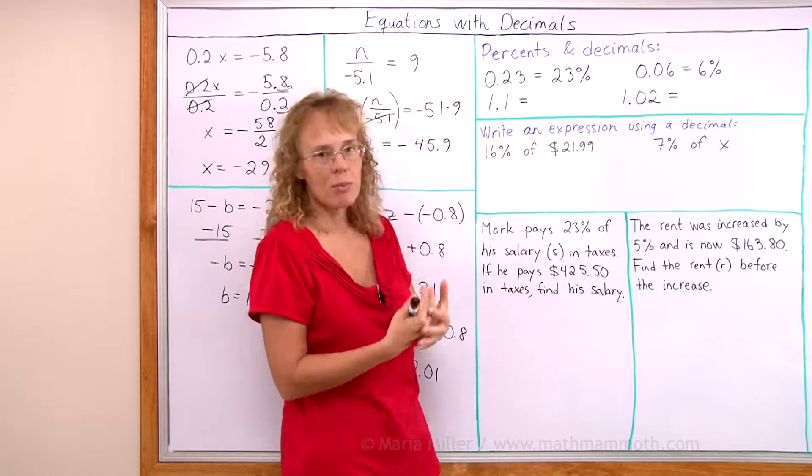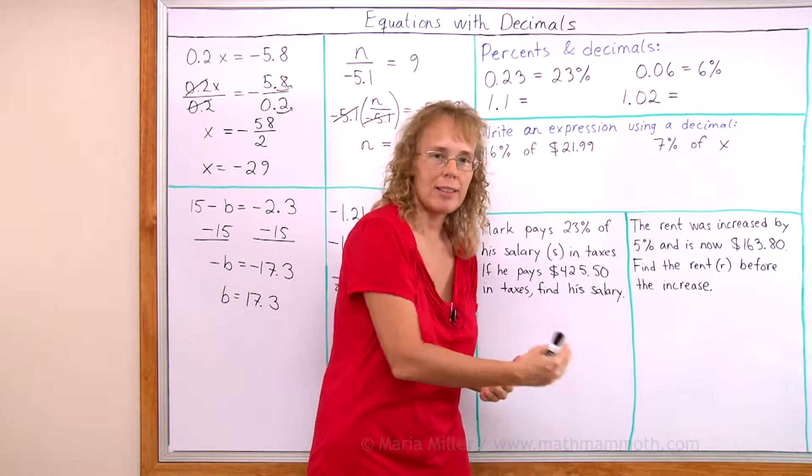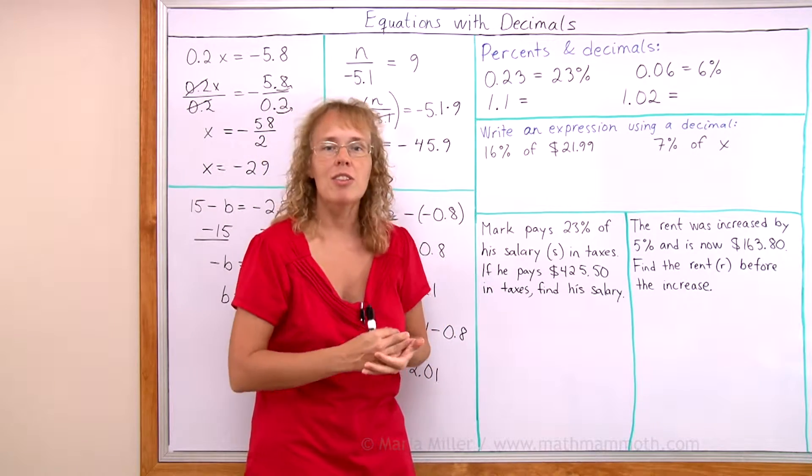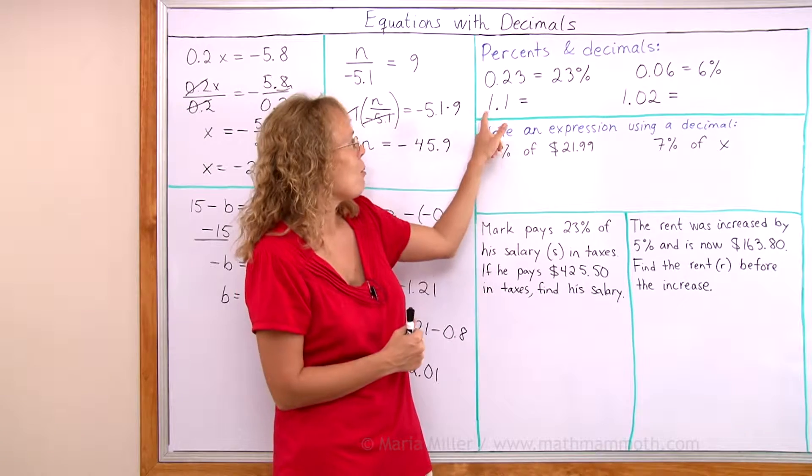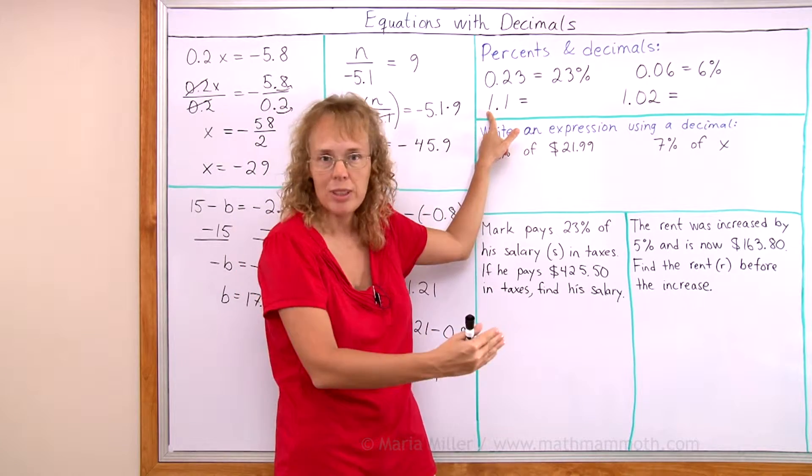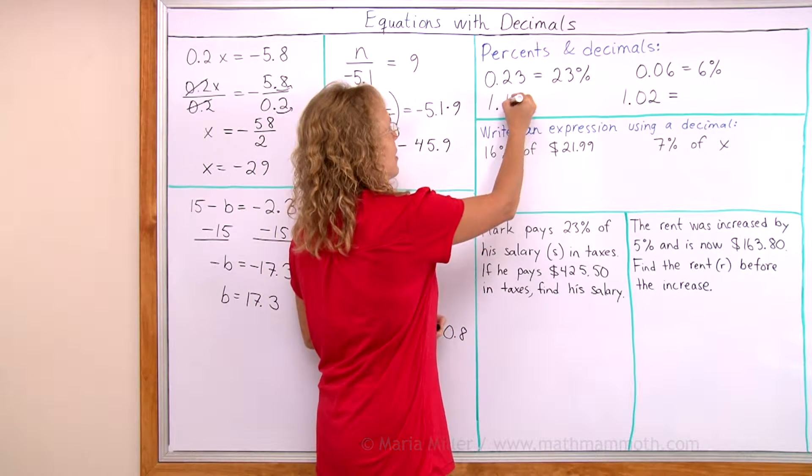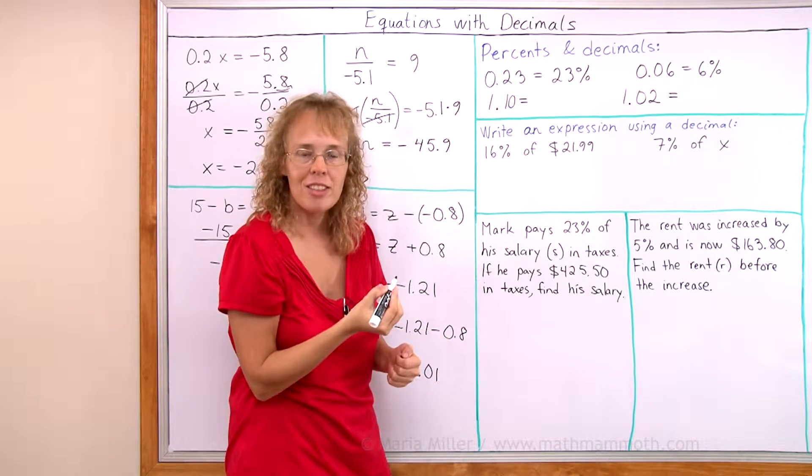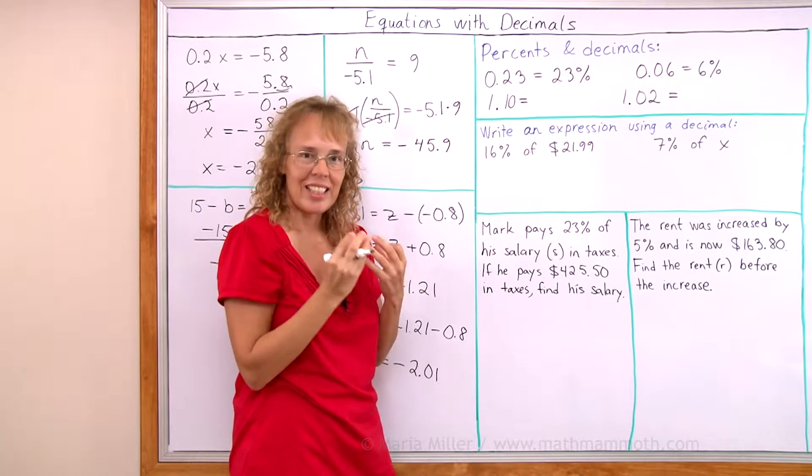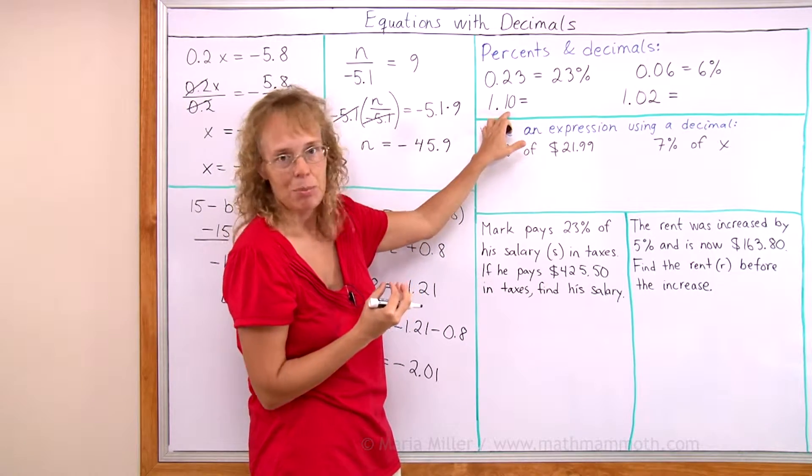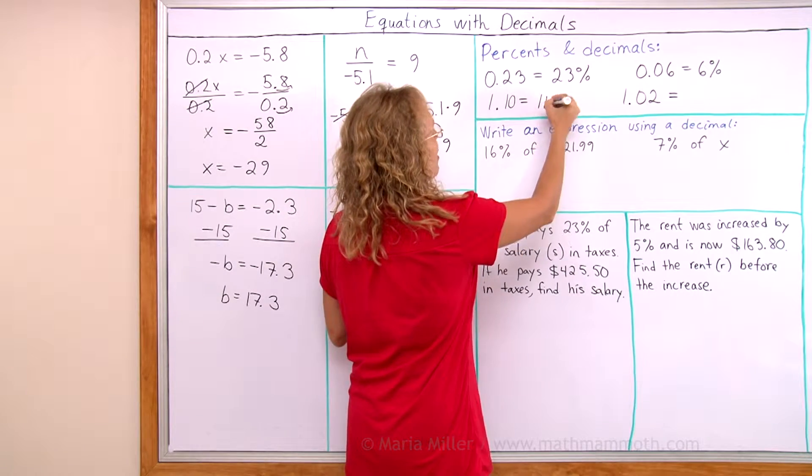Now 1.1 is a decimal number that we can change into a percent. You just have to think how many hundredths are there. The 1 itself makes 100%, and then this is one tenth, which if I write it as 10 hundredths, then you can see that it would be 10%. So there's 100% and 10%, or a total of 110%.